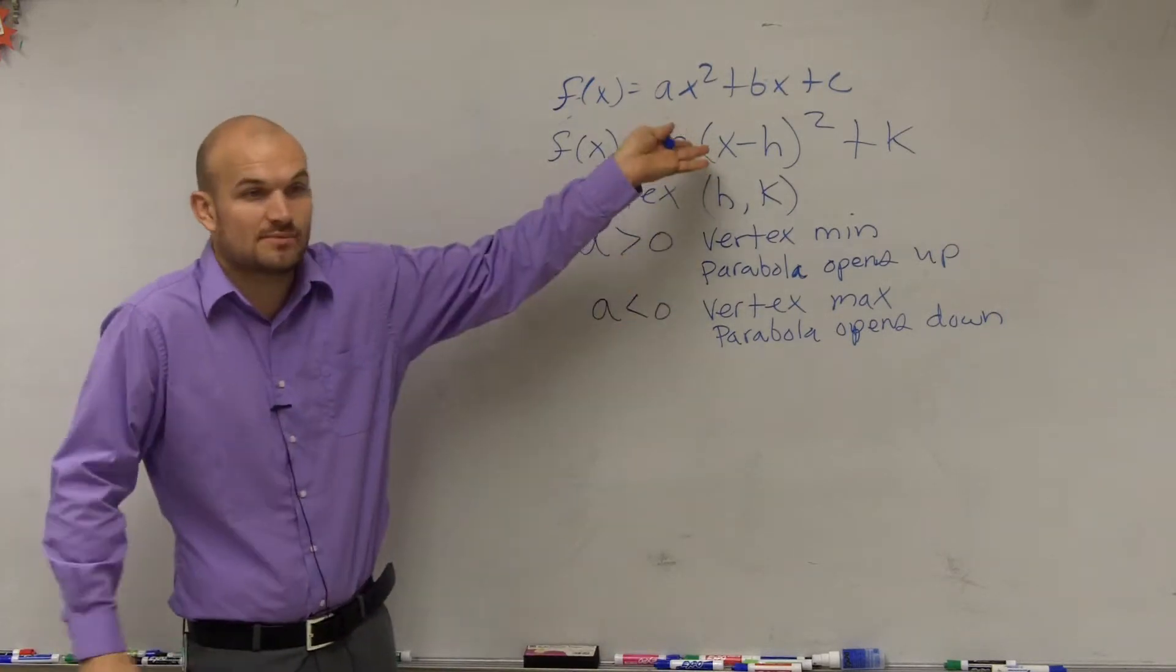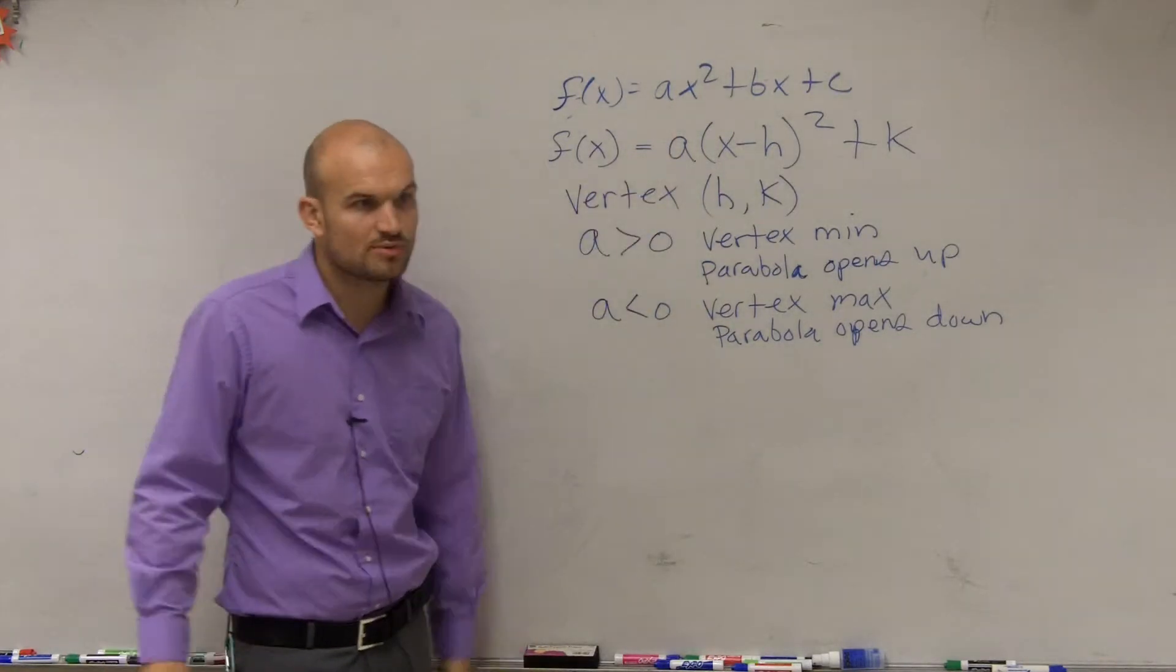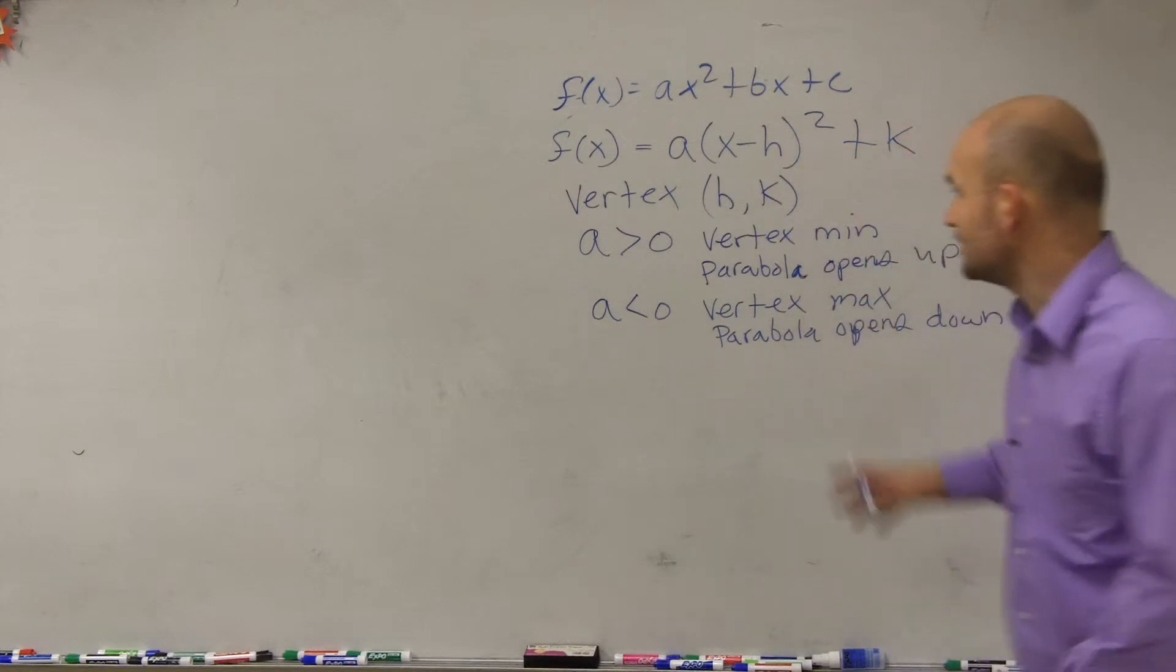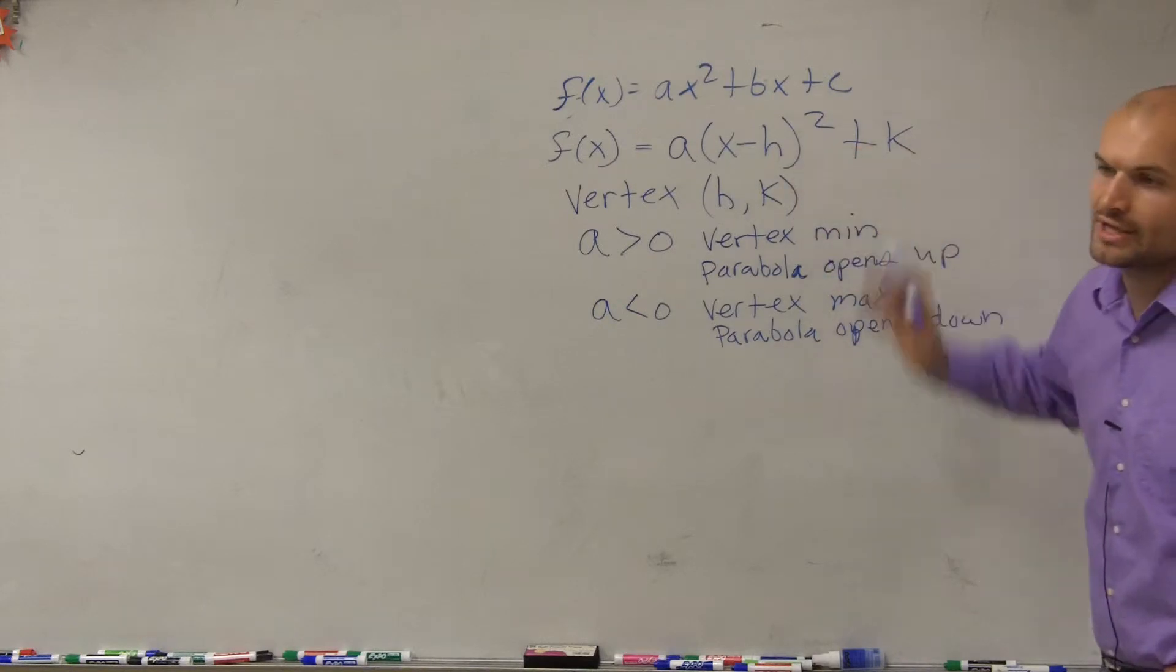So far, all we really know is if I have something in vertex form, I can just find the vertex and see if it opens up or down. Pretty basic, right? The next thing that's important about this is, if we were to look at this, what are these h and k really telling us to do?